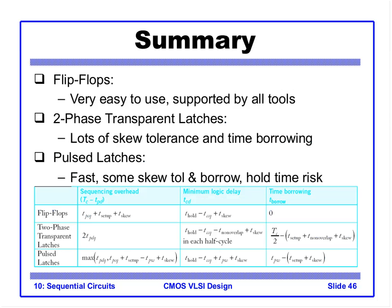To summarize: we saw the design of the two basic sequential elements — latches and flip-flops. Flip-flops are easy to use and supported by all tools. We saw three sequencing schemes: flip-flops, two-phase transparent latches, and pulse latches. Two-phase transparent latches require non-overlapping clocks and allow time borrowing but have skew tolerance problems. Pulse latches involve a completely different clock scheme and are rarely used in practice. Almost all of industry uses flip-flop-based design. The sequencing overhead table shows max delay, min delay, and time borrowing cases for each scheme.